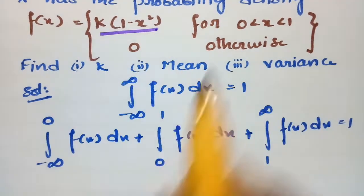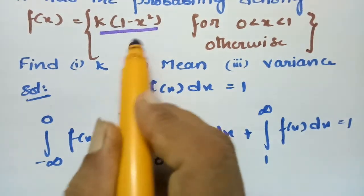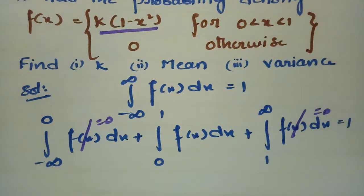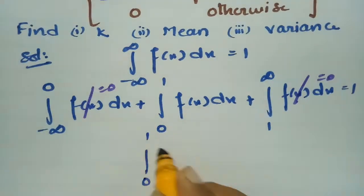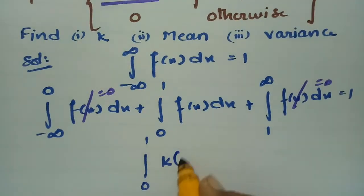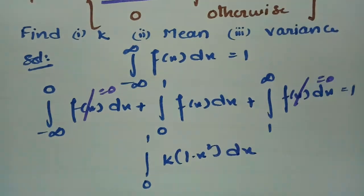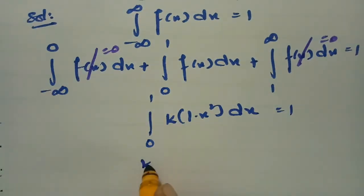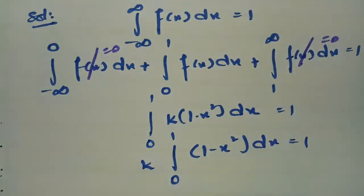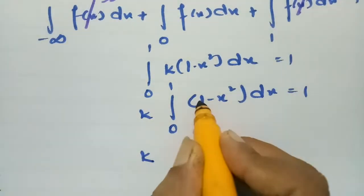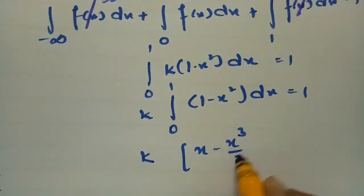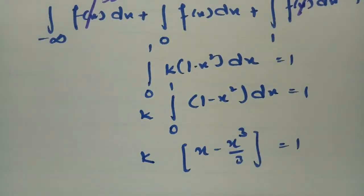Since f(x) is k times (1 minus x squared) only between 0 and 1, and 0 otherwise, the first and third integrals vanish. So we have k times the integral from 0 to 1 of (1 minus x squared) dx equal to 1. Integrating gives x minus x cubed over 3, evaluated between 0 and 1.